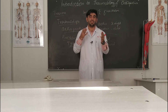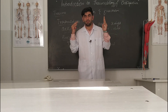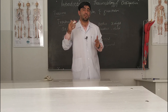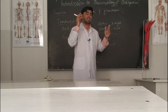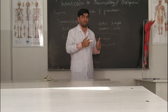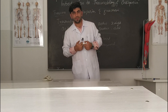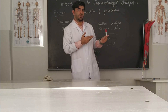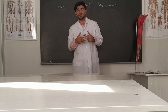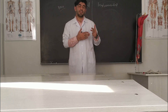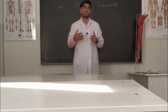Another term is subluxation. Subluxation means the partial loss of contact between the two ends of a joint. In dislocation there is complete loss of contact, while in subluxation there is only partial loss of contact between the two joint ends. This covers everything about orthopedics, traumatology, fractures, and dislocation.